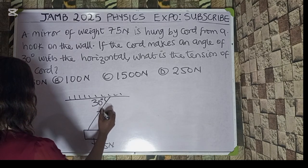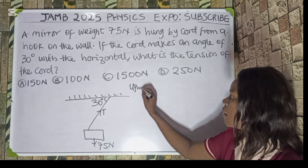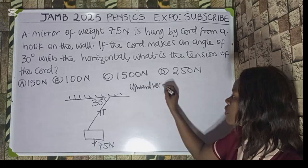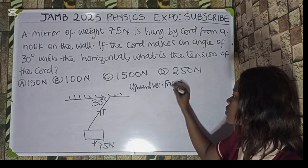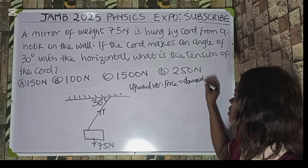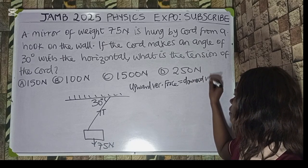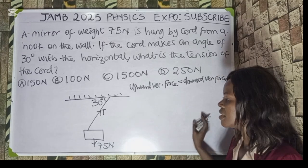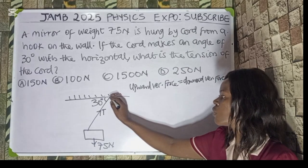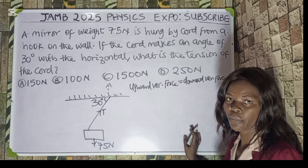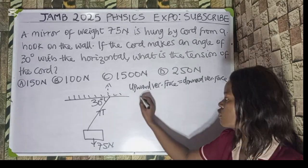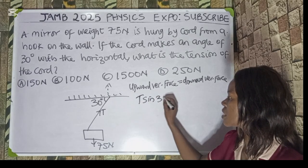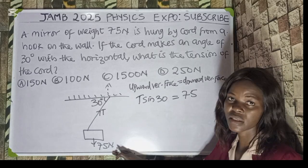The tension of the cord is acting upward. From this question, what you are going to do to find the tension is use: upward vertical forces equal downward vertical forces. What is the upward vertical force? This tension is acting up, but we resolve it to its vertical component. The vertical component of this vector will be T sine theta. This equals the downward force, which is 75.